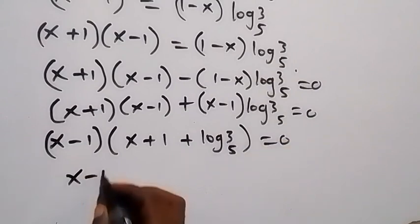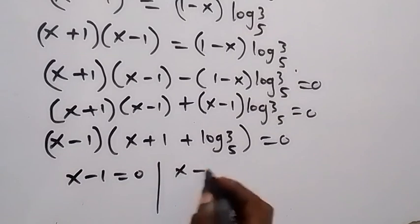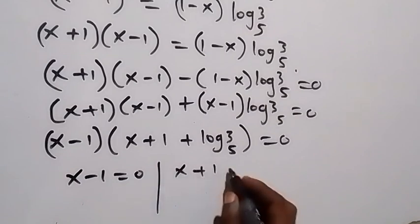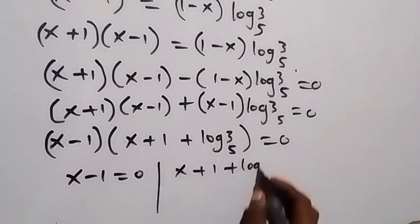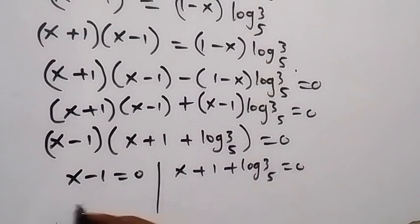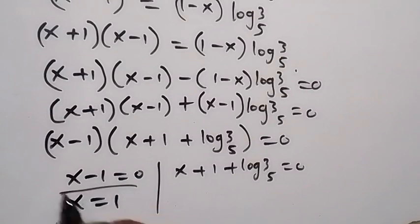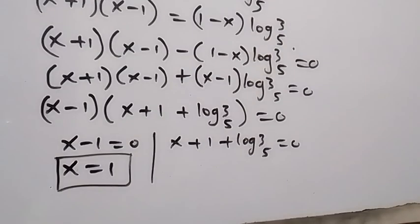We have two cases: x minus 1 equals 0, giving x equals 1; or x plus 1 plus log 3 to base 5 equals 0.